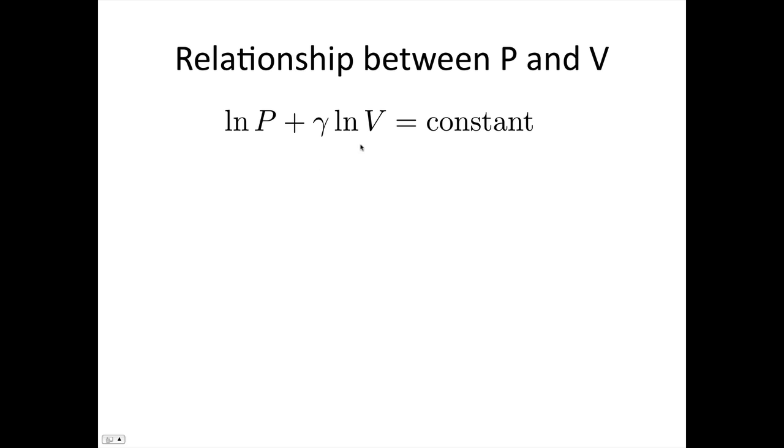Okay, now we're going to apply our log rules. We can write this expression here as log V to the power of gamma. And then log P plus log V to the power of gamma. Adding two logs, we can multiply the things within the logs. So we have log PV to the gamma is constant. Now we'll raise e to the power of this side and to the power of this side to get rid of our log. We have PV to the gamma is equal to some constant. This constant is a different constant to the constant here, but they're both constants.